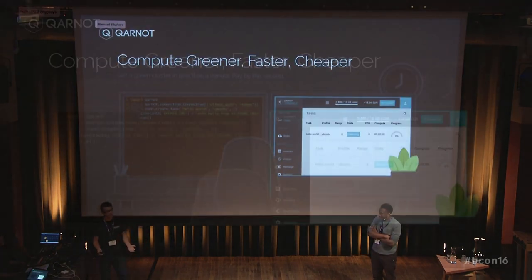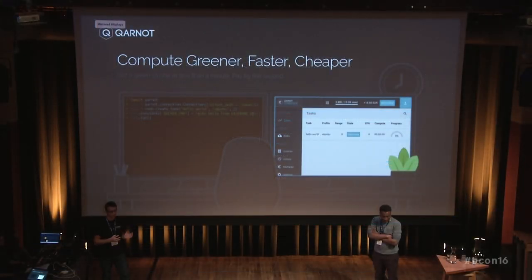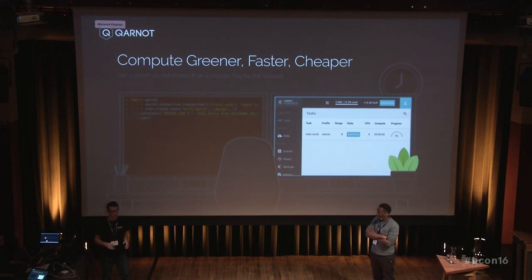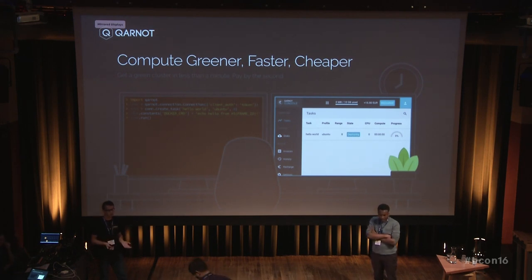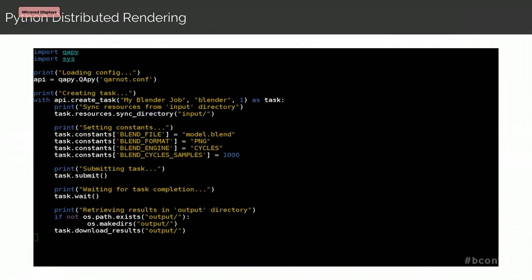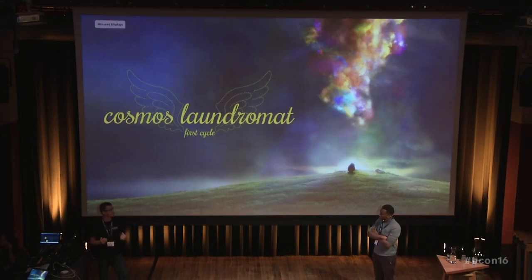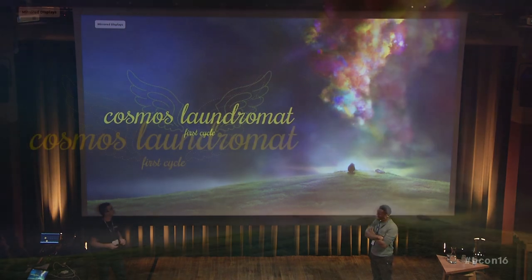With this, we are not only doing Blender rendering — we are a generic compute platform. We can do computation greener, because the heat is not wasted. It's faster, because you can get 100 CPUs in less than 40 seconds. And it's cheaper, because we have no infrastructure cost — we do not need to build or cool a data center. We also have a Python SDK to start computation on our platform; with a single line of Python, you can start a Blender rendering and get the result back within minutes. We also worked with the Blender Foundation and did all the rendering for the Cosmos Laundromat movie.